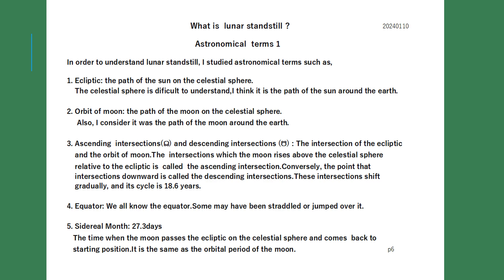Astronomical terms 1: In order to understand lunar standstill, I studied the following terms. 1. Ecliptic: the path of the sun on the celestial sphere — I think of it as the path of the sun around the Earth. 2. Orbit of moon: the path of the moon on the celestial sphere, or the path of the moon around the Earth. 3. Ascending and descending intersections: the intersection of the ecliptic and the orbit of the moon. The intersection at which the moon rises above the ecliptic on the celestial sphere is called the ascending intersection; conversely, the point where it intersects downward is called the descending intersection.